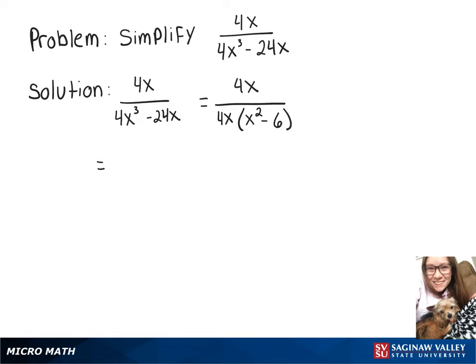We can rewrite that as 4x over 4x times 1 over x squared minus 6. Since 4x over 4x equals 1, that cancels, which leaves us with 1 over x squared minus 6.